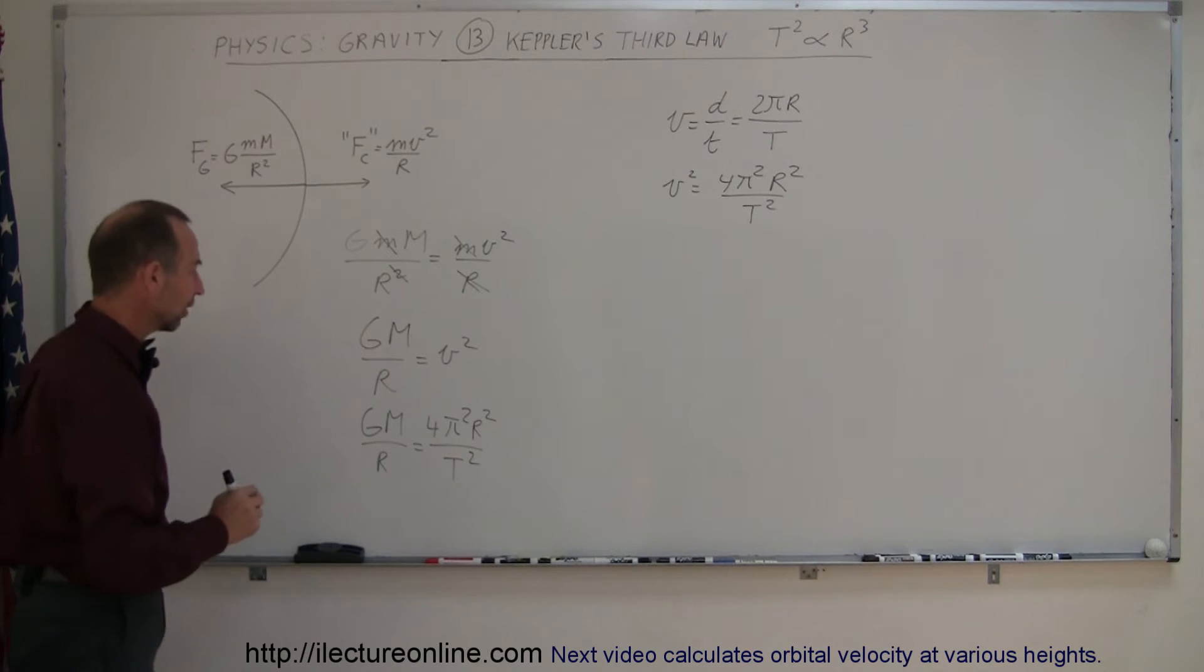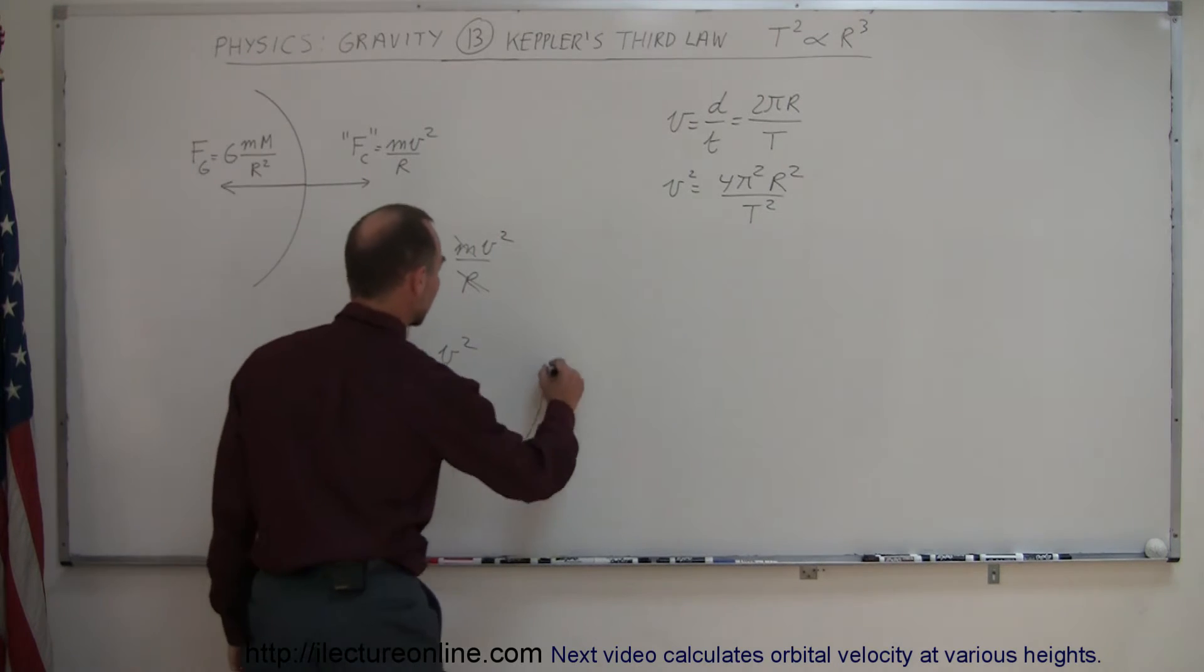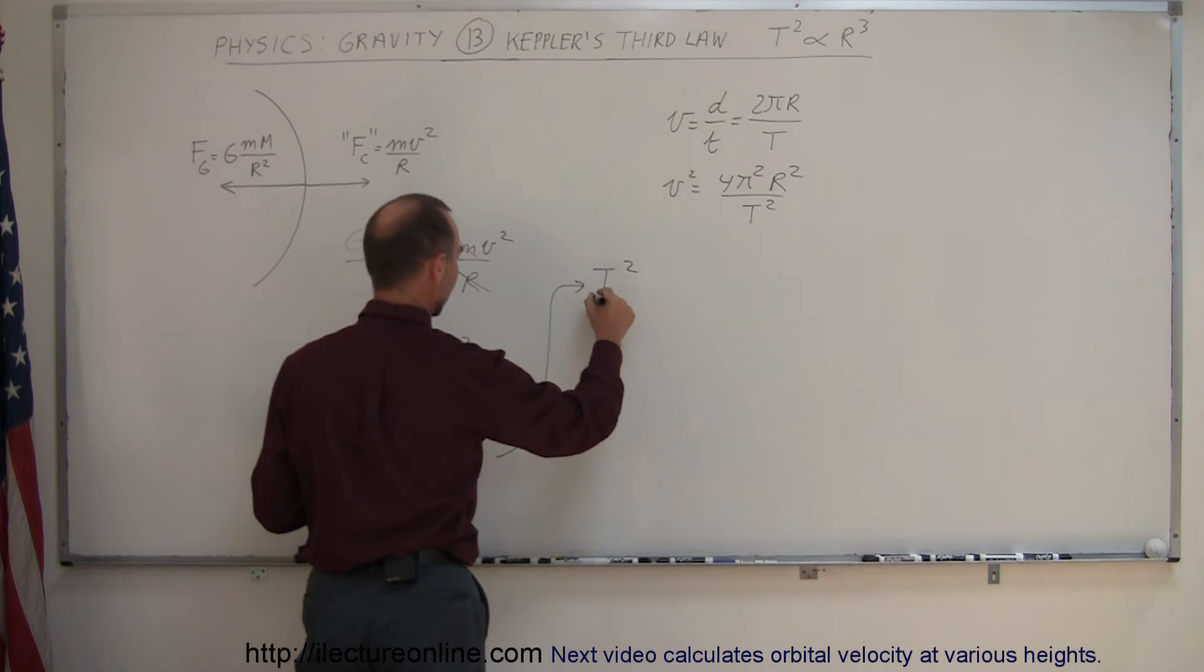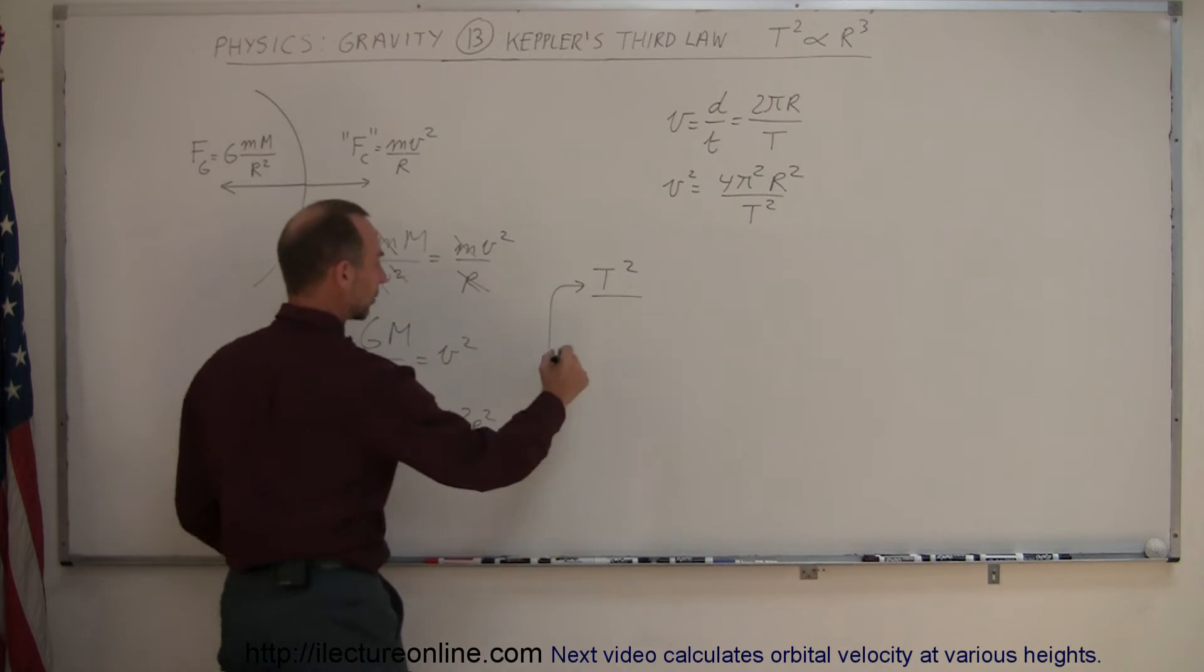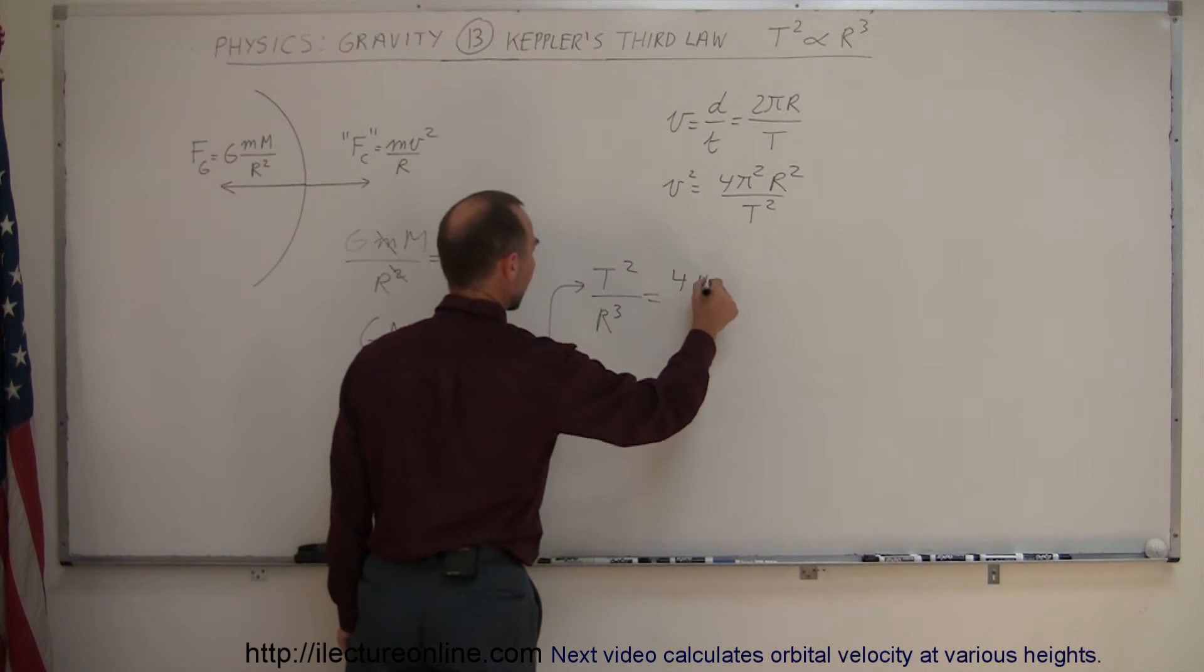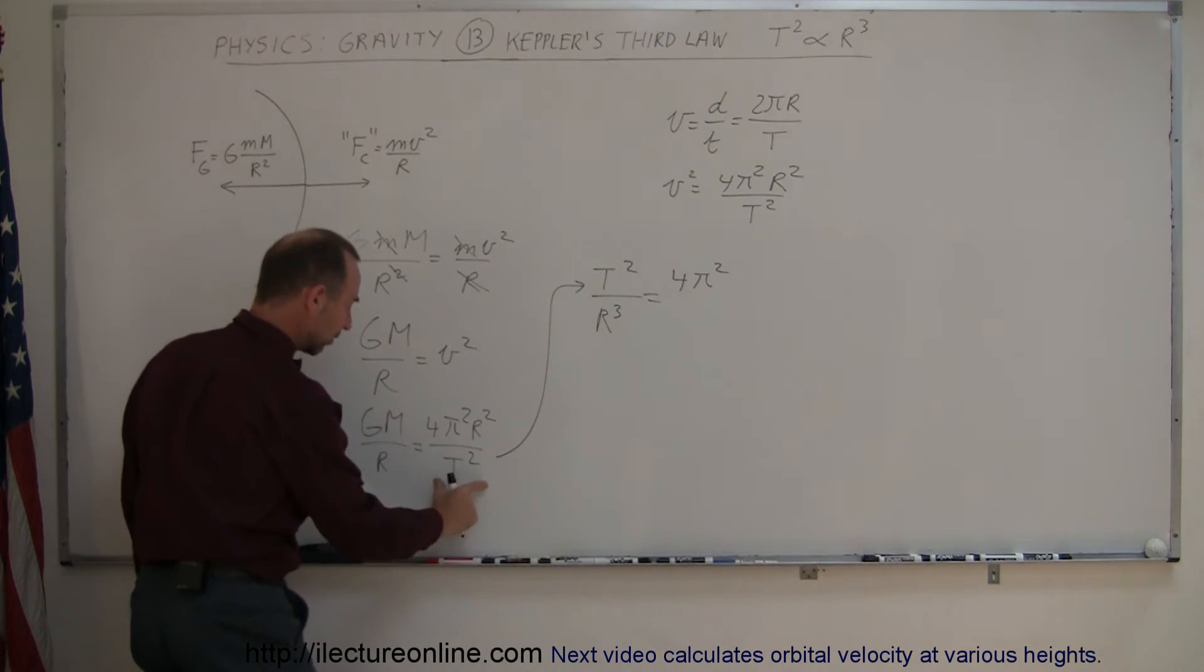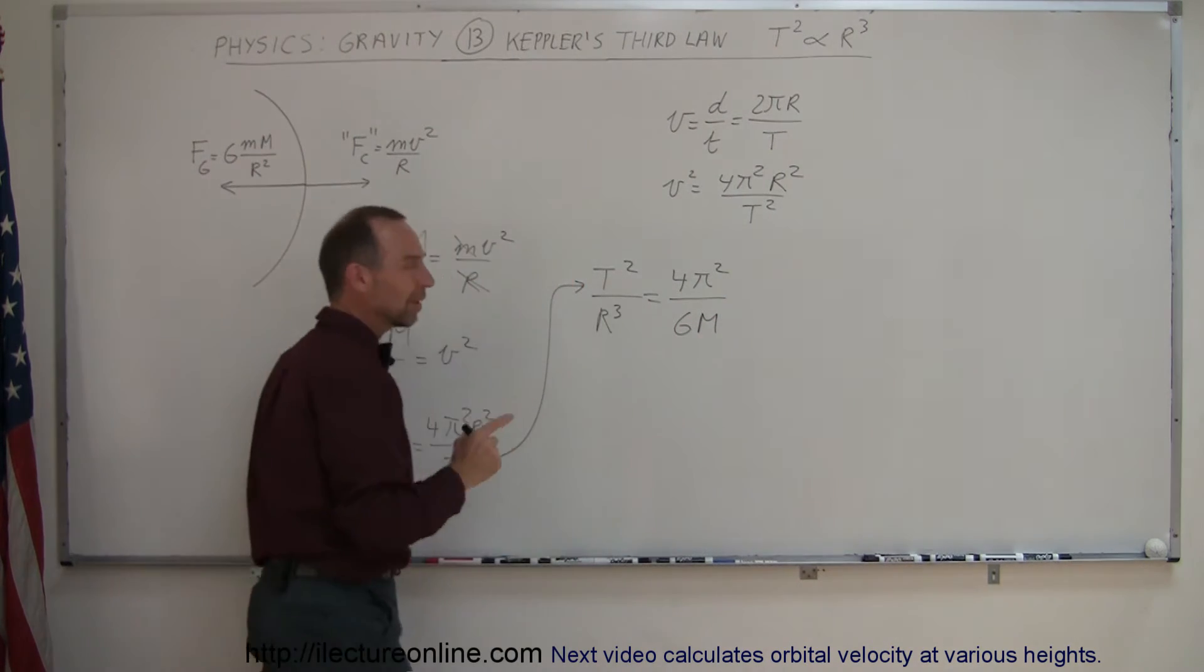So now let's solve this for, let's put T squared over here, put all the R squares over here. So we're going to put T over this way, so T squared divided by, we have an R here already, if I take the R squared, bring it down there, that becomes R cubed. R cubed is equal to, I'm going to leave the 4 pi squared over here, and then I have the G and M, so divided by G and M.